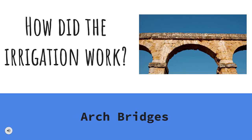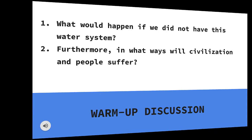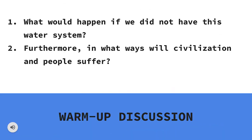This was an efficient way to reach the people of the Empire. Now that we have discussed the Roman arches and bridges in more depth, we will ask a few important questions to think more deeply on the importance of Roman aqueducts. Here's a question for students to consider: What would happen if we did not have this water system? And in what ways would civilization and people suffer?